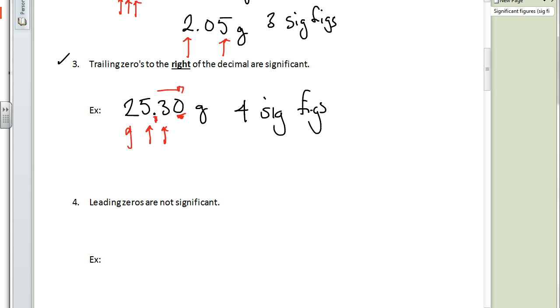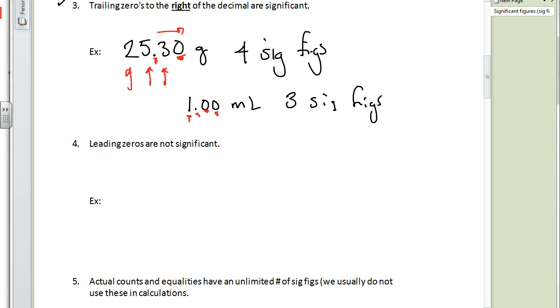Likewise, we'll give you another example here. If we had 1.00 milliliters, we know that the one is significant. These zeros are trailing, and they are to the right of the decimal, so they also count. And so we would count those, and that would be three sig figs.